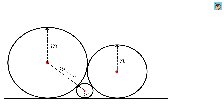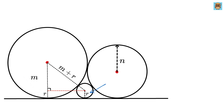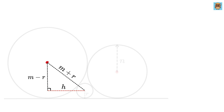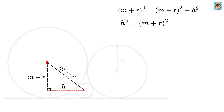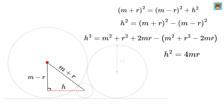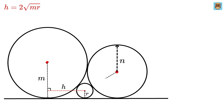The distance between the centers of circle m and circle r will be m plus r. Next, let us draw radius m and then draw a horizontal line perpendicular to this radius. The length of this small piece will be r, so the remaining piece will be m minus r. Let the length of this horizontal segment be h. Using Pythagoras theorem: (m+r)² = (m−r)² + h², therefore h² = 4mr, or h = 2√(mr).